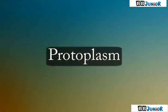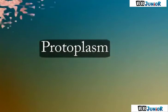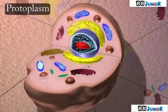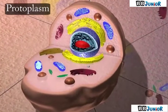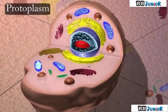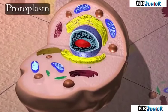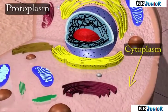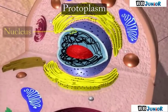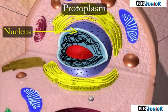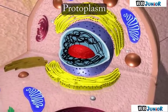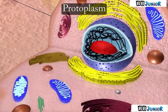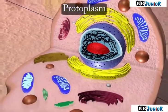Protoplasm is the living substance of a cell and includes cytoplasm, nucleus, and all other organelles present in the cell.